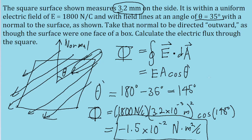the only thing that changes is the sign of the result. Even with 35 degrees, you'd still get 1.5 × 10^-2, just positive instead of negative.